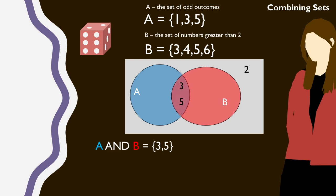We can also combine these sets to give the set of all the numbers on the die that are odd or greater than 2, which will give the set of 1, 3, 4, 5, and 6.